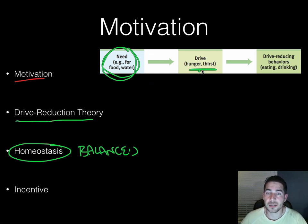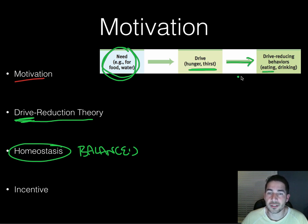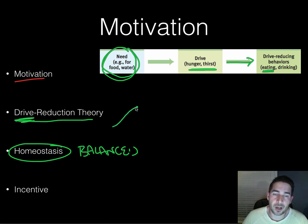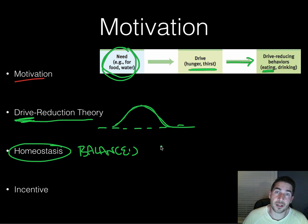When you have a need for something, that becomes unbalanced. That need creates a drive. For example, if we need food, the drive created is called hunger. We then have to do something to reduce that drive — we're going to eat. So if our hunger level goes up, we want to bring it back down to homeostasis. That's basically the idea behind drive reduction theory, which applies mostly to biological needs.